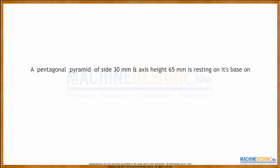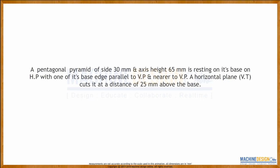A pentagonal pyramid of side 30mm and axis height 65mm is resting on its base on HP with one of its base edges parallel to VP and nearer to VP. A horizontal plane cuts it at a distance of 25mm above the base. Draw its front view and sectional top view.